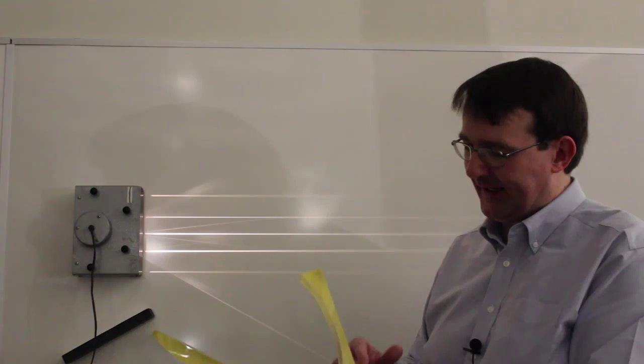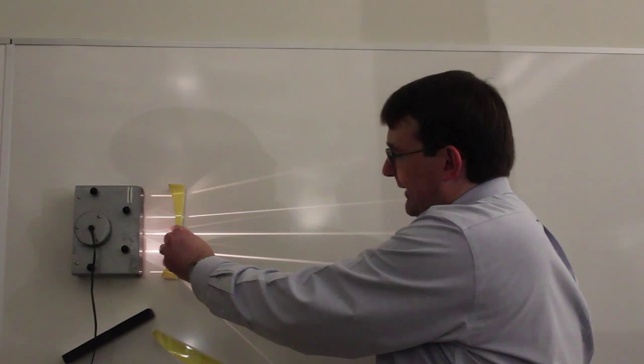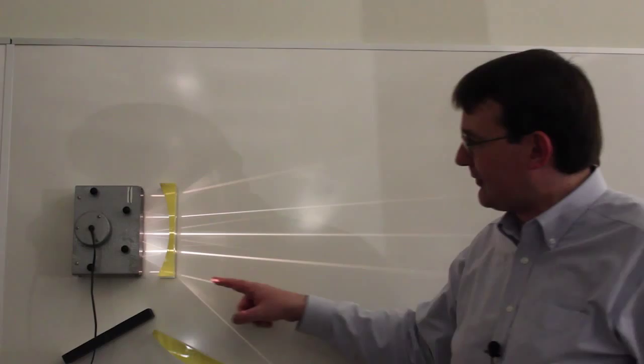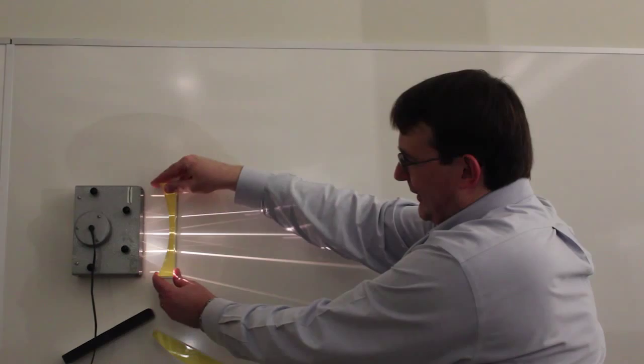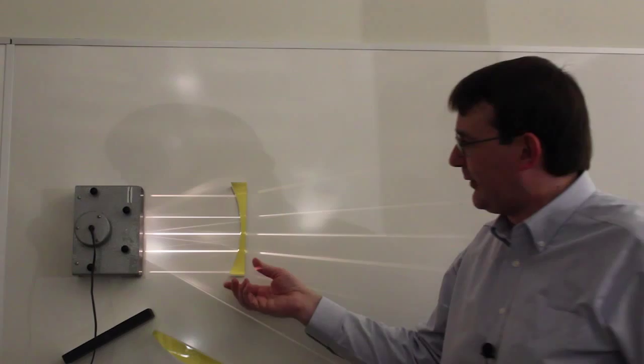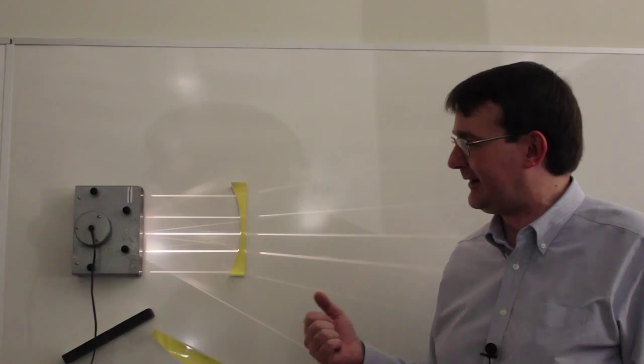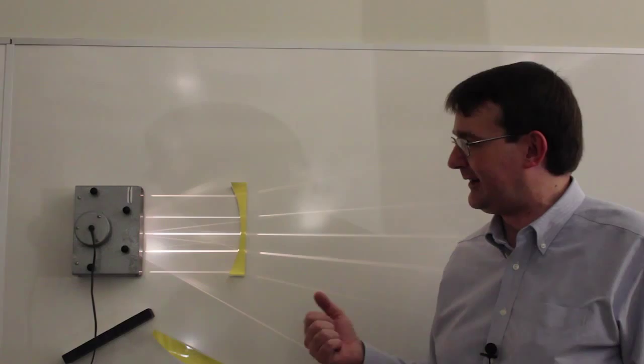What about a diverging lens? Here I have a plano-concave lens — thinner in the middle and wider at the edges, flat on one side and concave on the other. If I put that close to the ray box, you can see that the rays on the other side diverge as if they were coming from a point — that point is the focal point of the lens. So we can see that both converging and diverging lenses behave as expected, having focal points and a focal length.